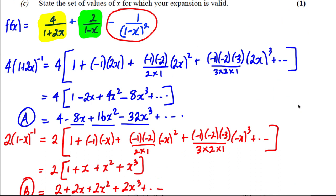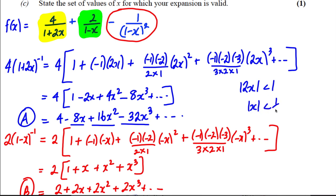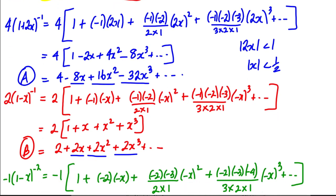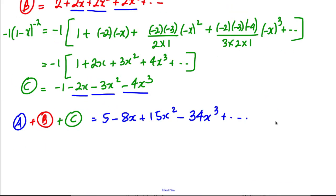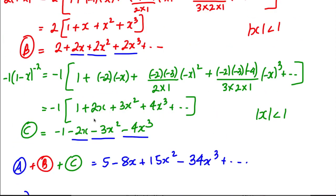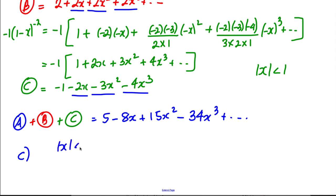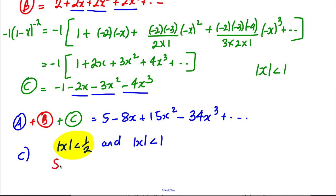For part c, I should note a correction from the expansions: for 4(1 + 2x)⁻¹ to be valid, we need |2x| < 1, so |x| < 1/2. For 2(1 - x)⁻¹, we need |x| < 1. For -(1 - x)⁻², we need |x| < 1. For all expansions to be valid simultaneously, we take the strictest condition. That is |x| < 1/2, and that is the answer to this question.